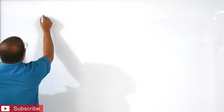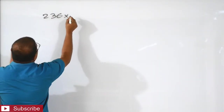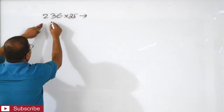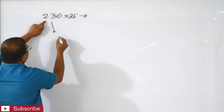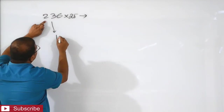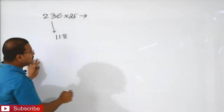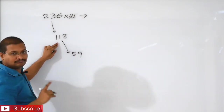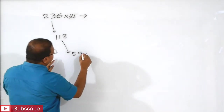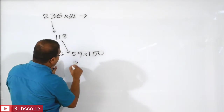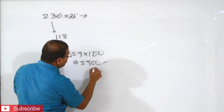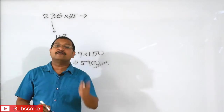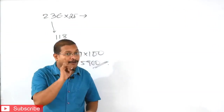I am taking now 236 into 25. If I want to multiply, what you will do? Half of this, what you will get? 118. One more time, half we will take — that means 59. Then what you will do? Multiply by 100. That means your answer is 5,900. This way we can multiply any number into 25.